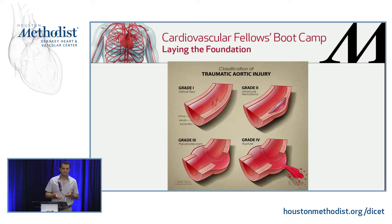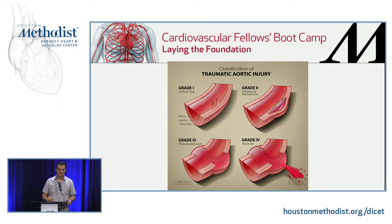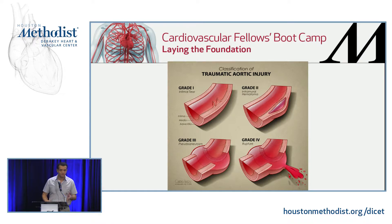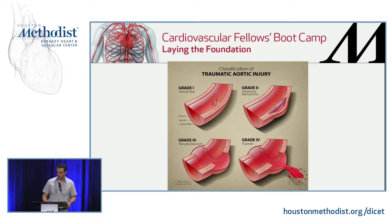A lot of times when you see grade two and three, patients have concomitant injuries like a brain injury. Neurosurgery wants to raise the pressure, so you end up treating the aortic injury so they can raise the pressure for the brain injury. On the other hand, there was a lady a few months ago with grade two, very small hematoma, surprisingly few other injuries — just a few broken ribs. I watched her and she did fine. She lives close by, we're doing follow-up, and she almost healed her injury. So you can individualize your cases.